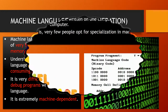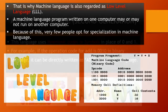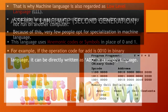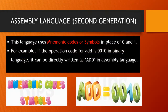Machine-dependent means the programs created using machine language will work only on the same computer on which they were made. If we take the program to another computer, the program does not work there. So this language was tough to learn, time-consuming, and machine-dependent. That's why it is regarded as a low-level language. In earlier days this language was used, but nowadays we can't use it. In the second generation, the development made was assembly language.